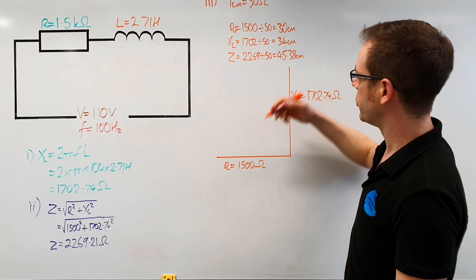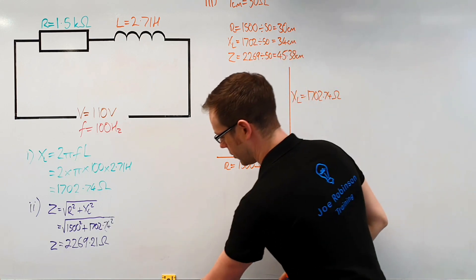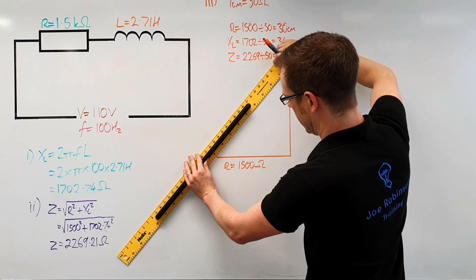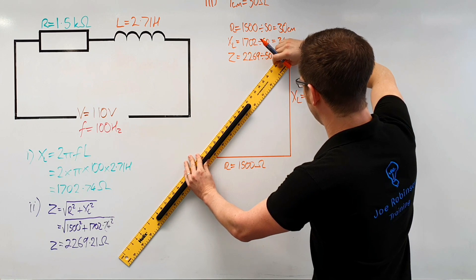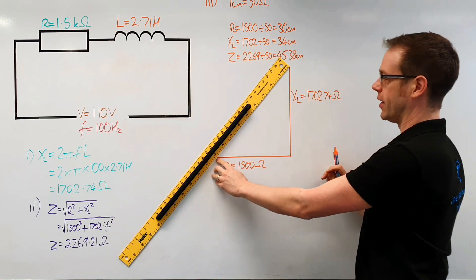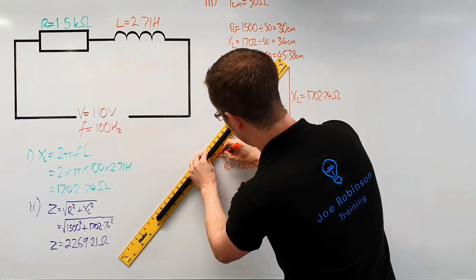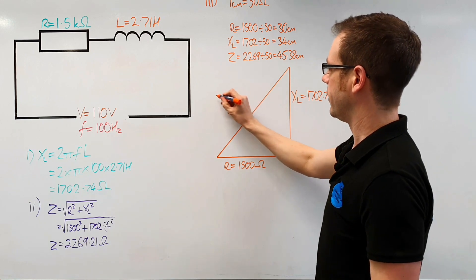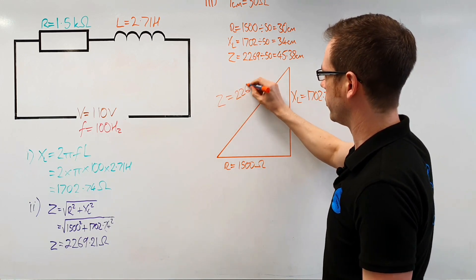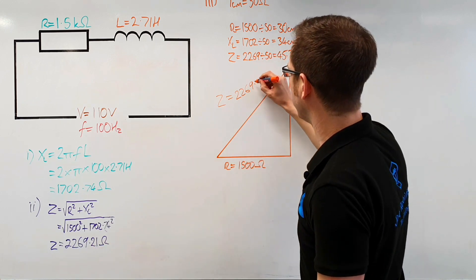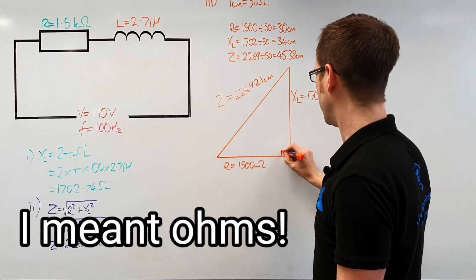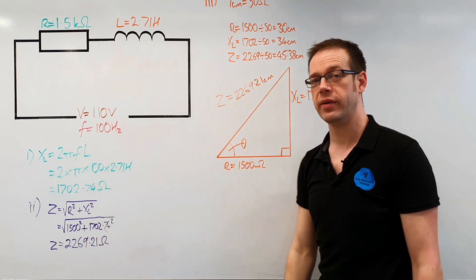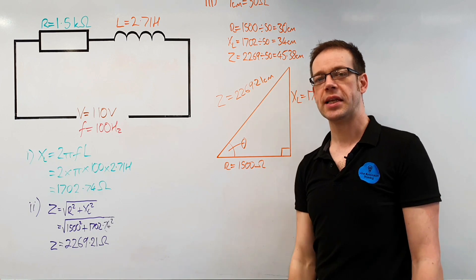Now I should find that if I measure the distance from the top of the XL line down to the start of the R line, that line should measure just over 45 centimeters long. And there it is — absolutely beautiful — just over 45 centimeters. So that line is the impedance line, Z equals 2,269.21 ohms. The right angle goes on the right, and it's good practice to mark the angle theta, because we know from previous videos that angle is really important to understanding power factor.